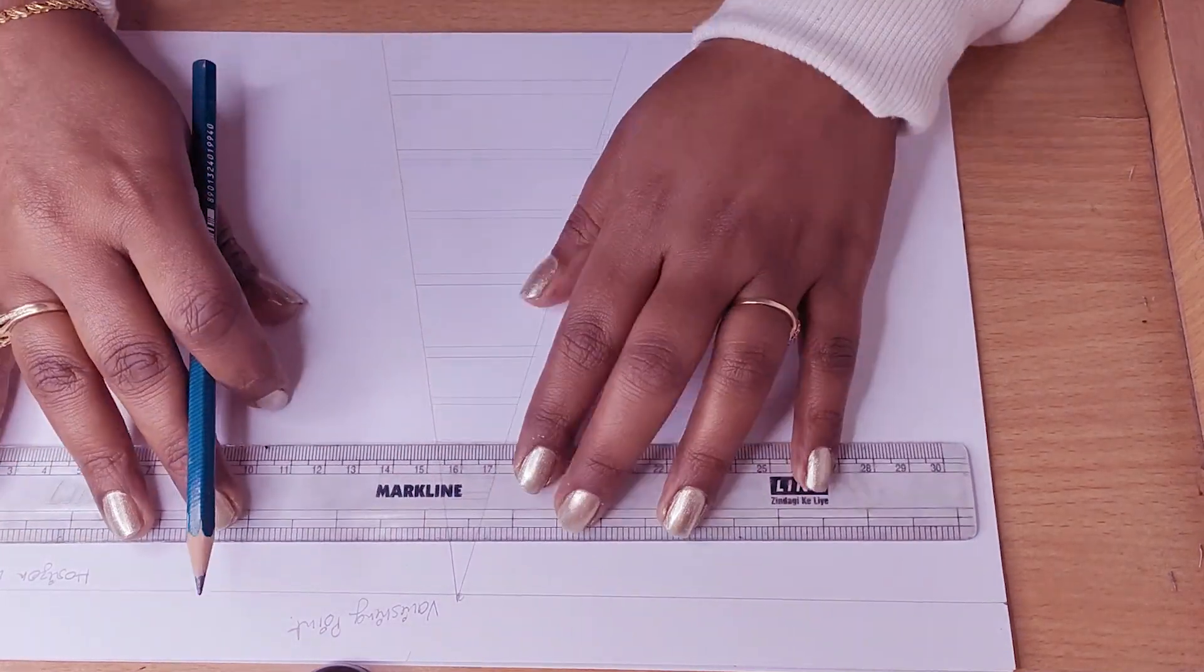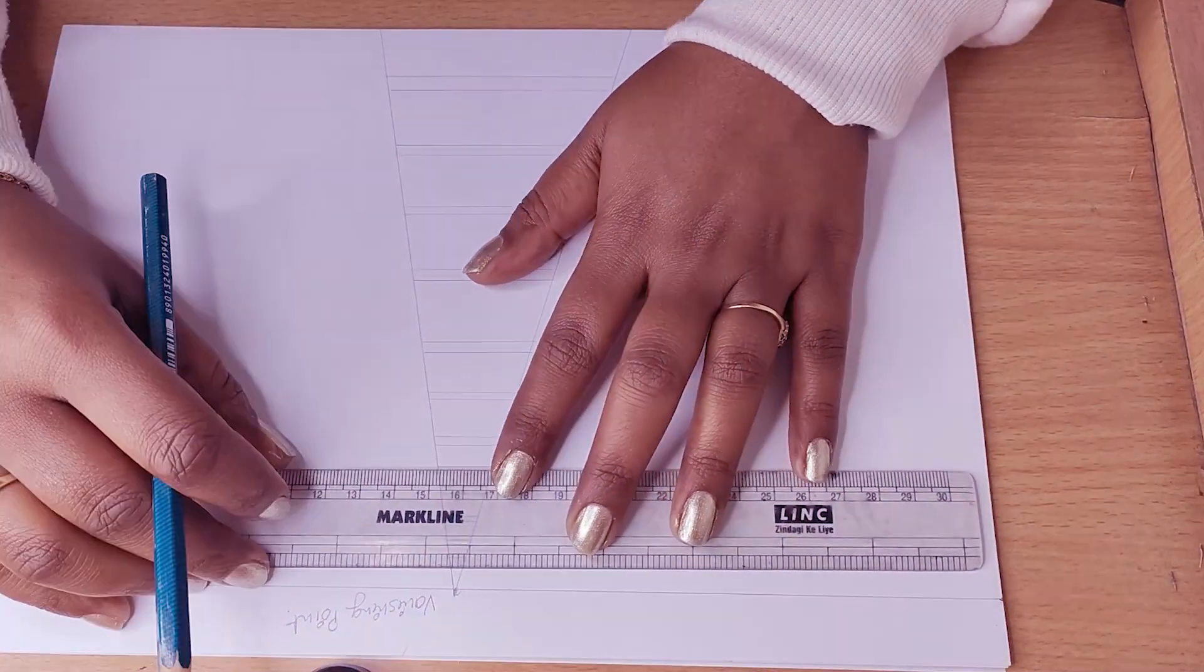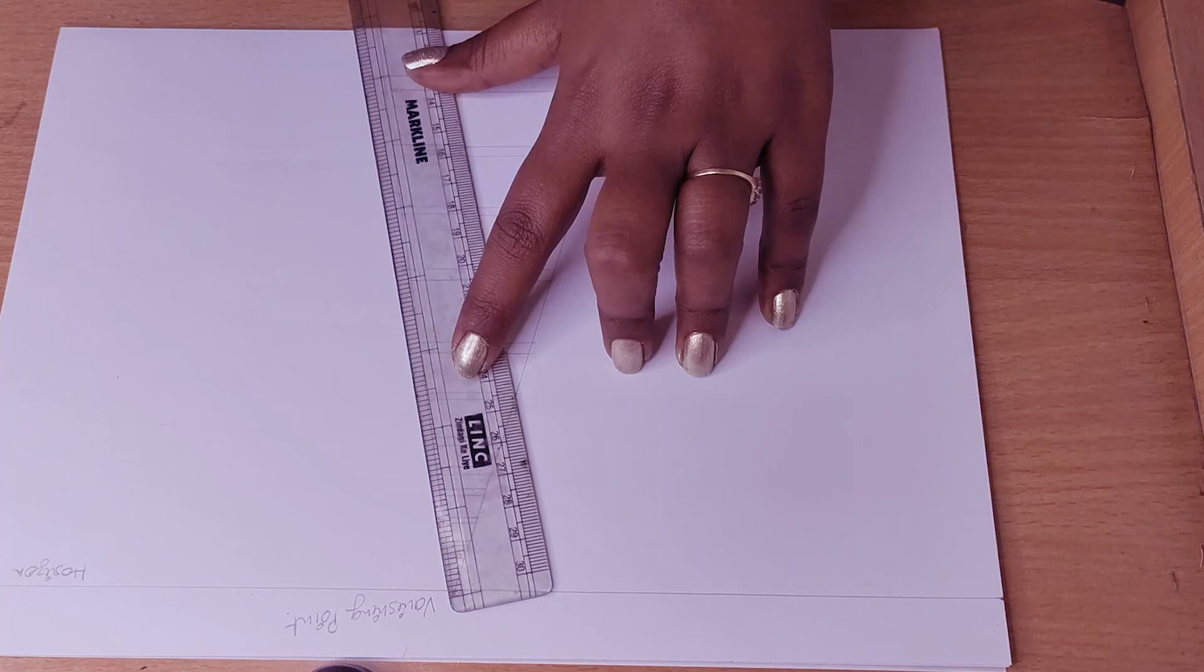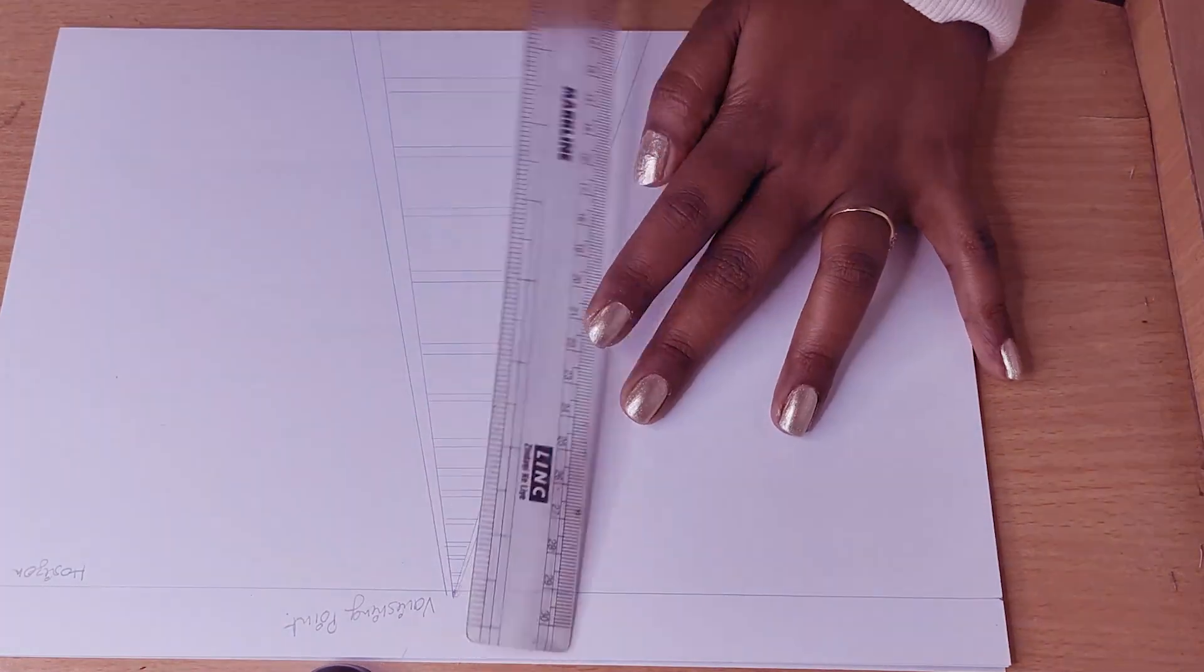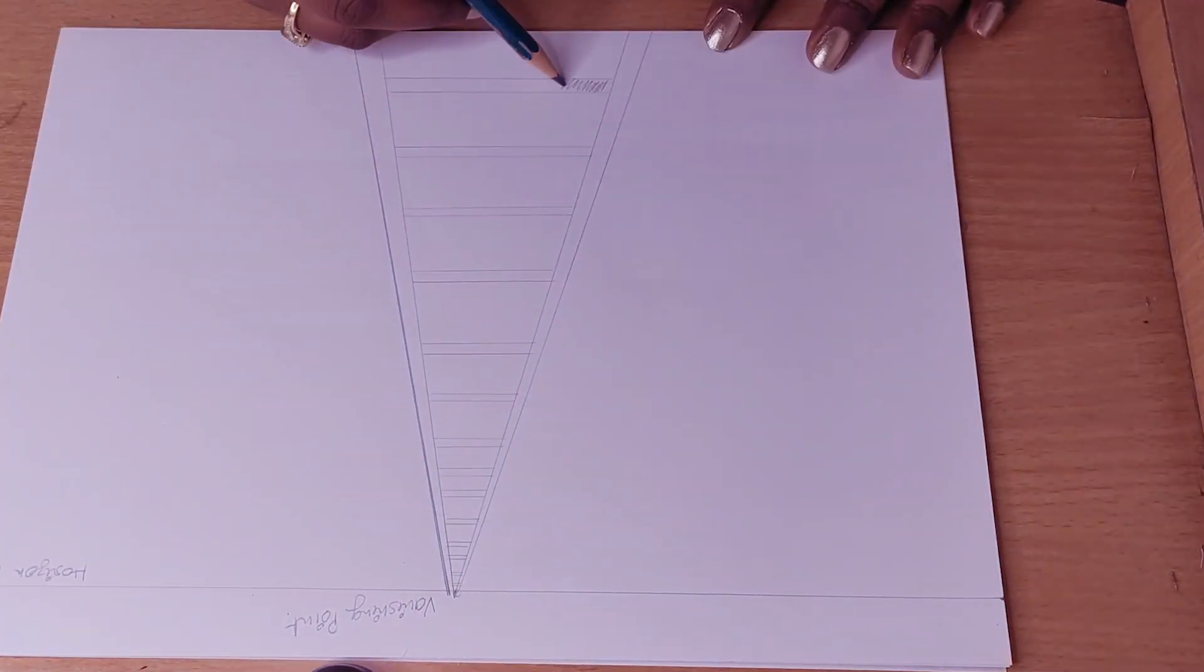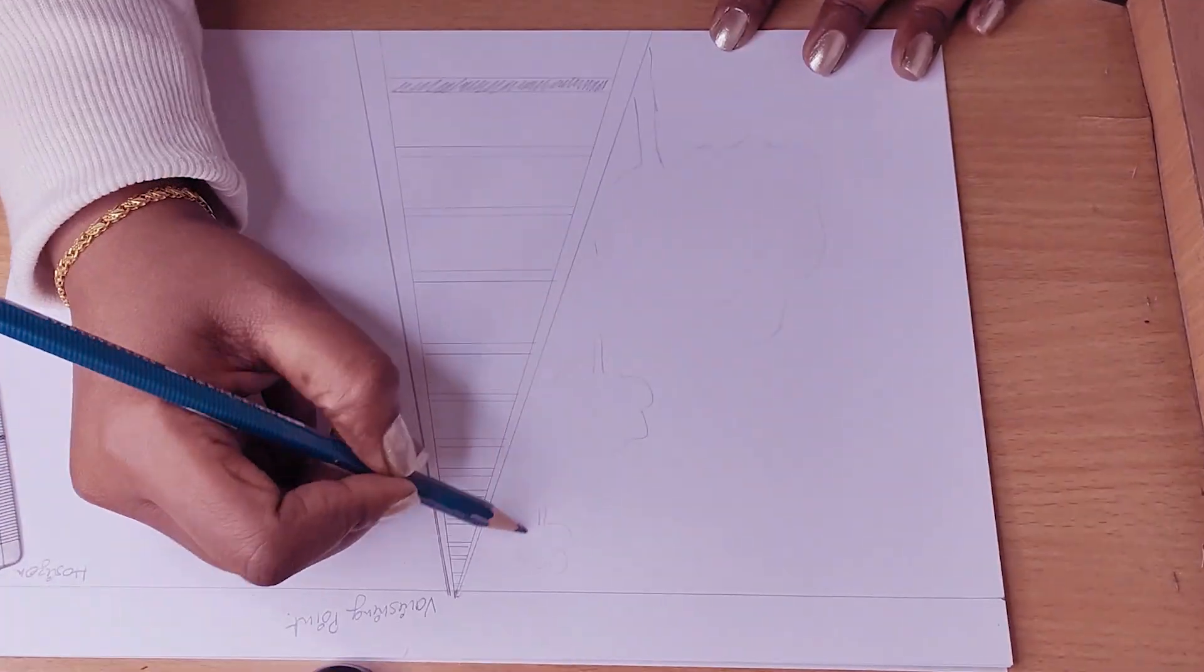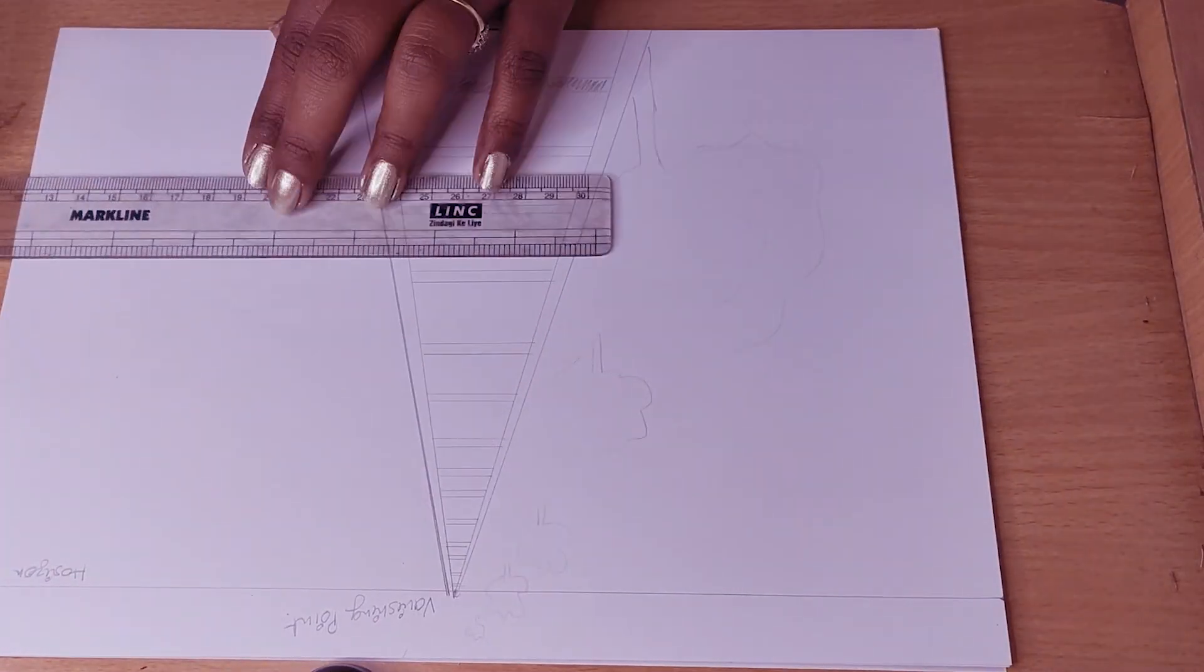Why we call it one-point perspective? Because there is a single point where all lines meet.